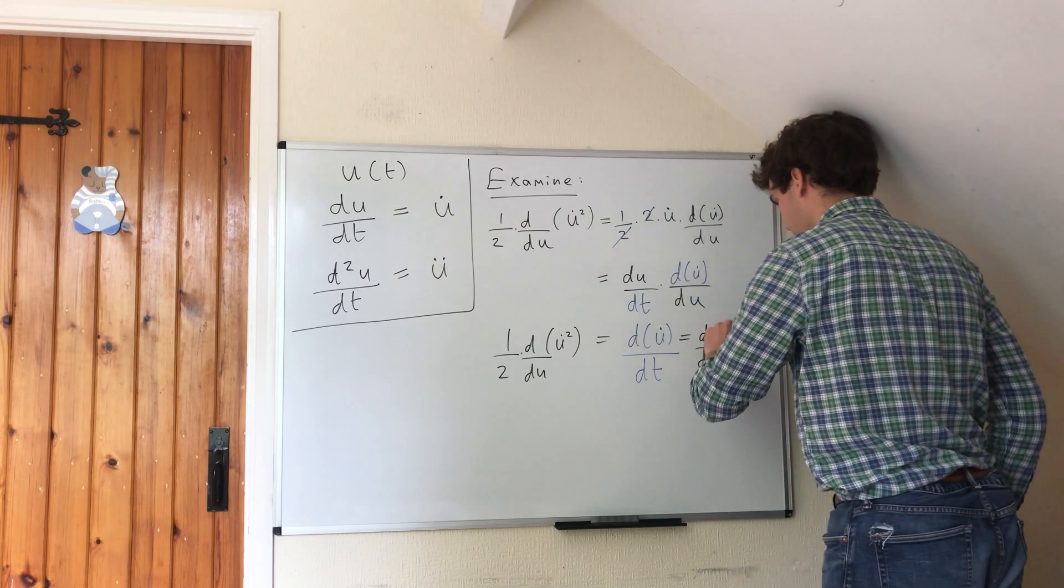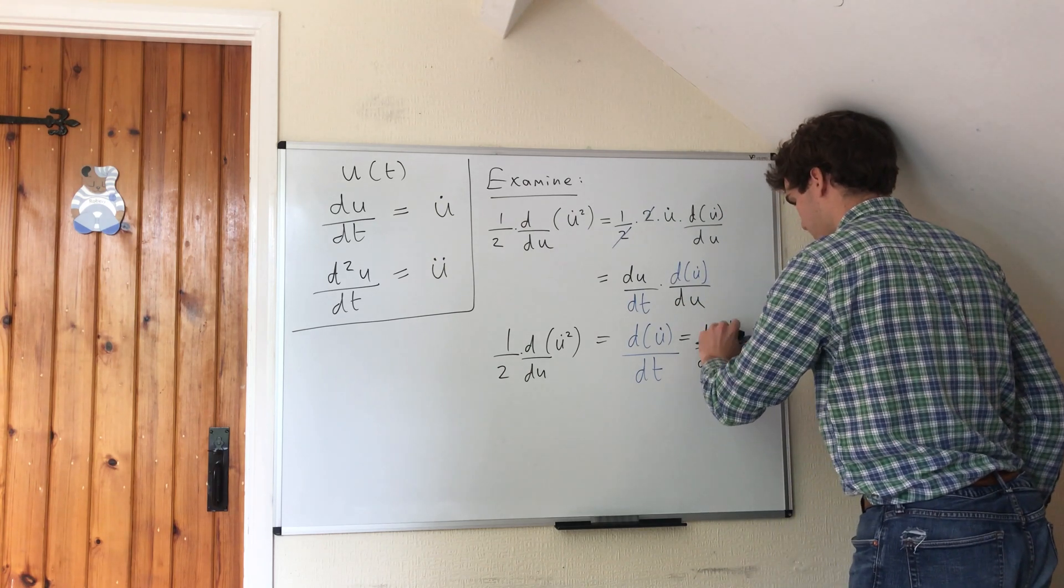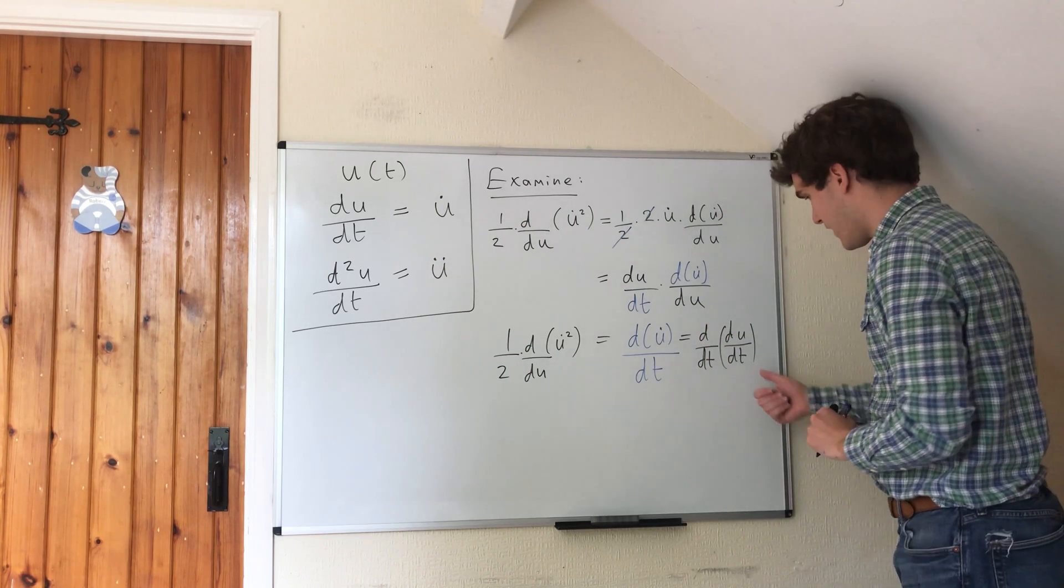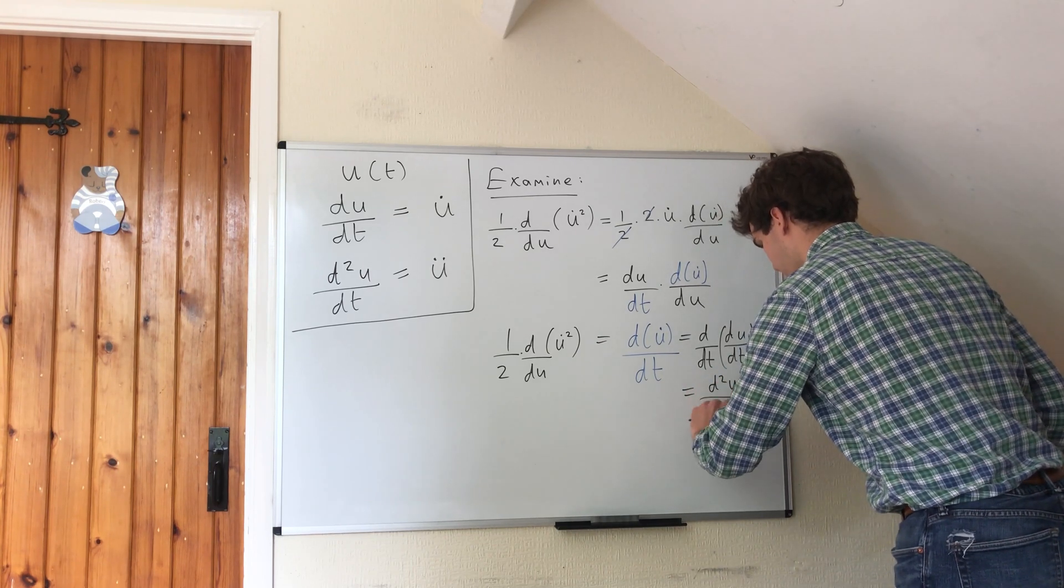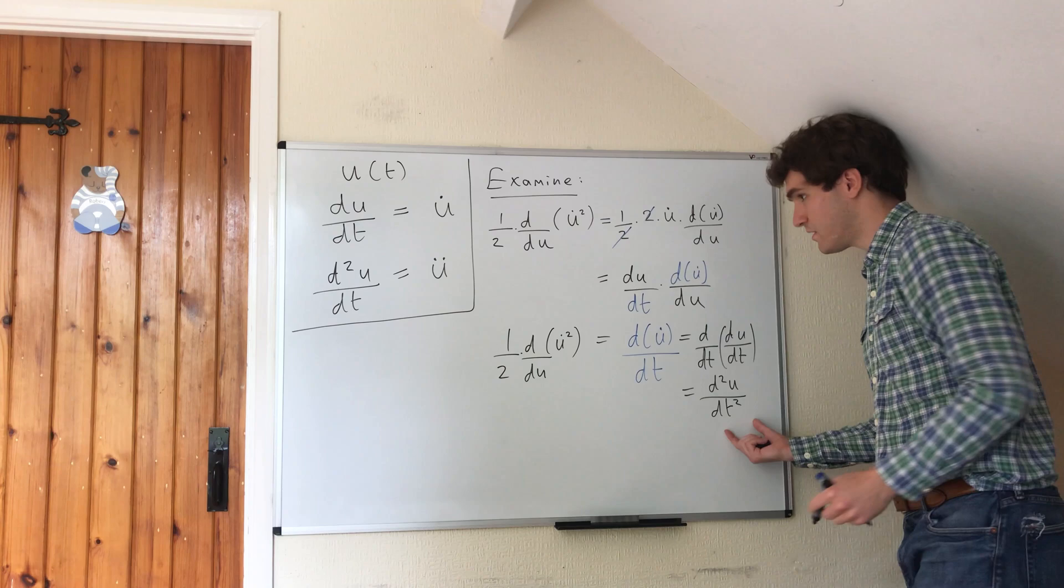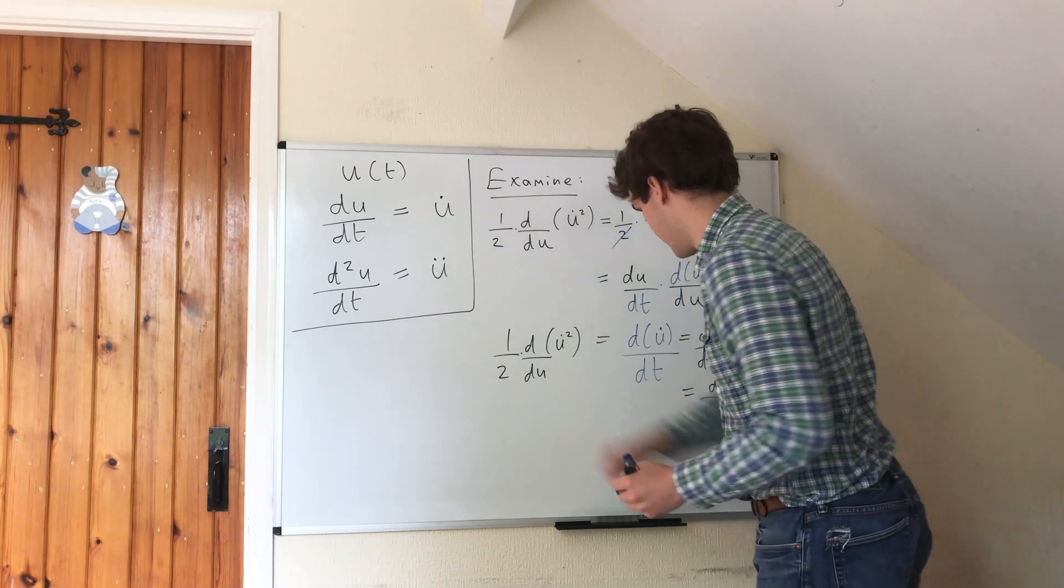And this is just going to be, by definition, the second derivative, d squared u dt squared. And the second derivative is just u double dot.